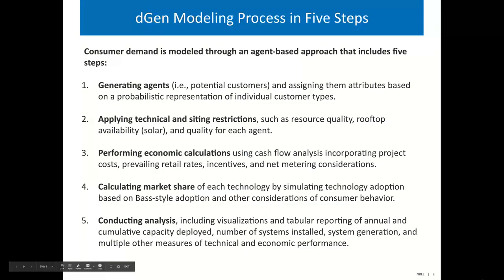The DGEN model uses five steps. First is generating agents through statistical sampling. Second is applying technical or siting restrictions — associating a rooftop size with each agent and understanding technical restrictions related to rooftop tilt, azimuth, and resource quality. Third is performing economic calculations using 8,760 hours of data — hourly data for an entire year of resource potential and demand — to look on an hourly basis over the entire system lifetime at detailed cash flows, incorporating project costs, retail rates, incentives, and net metering or net billing policies. Fourth is calculating market share using a Bass diffusion model. Fifth is conducting analysis.